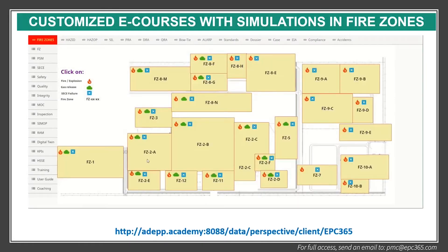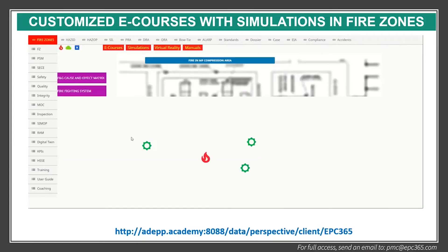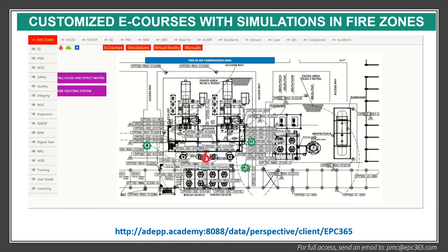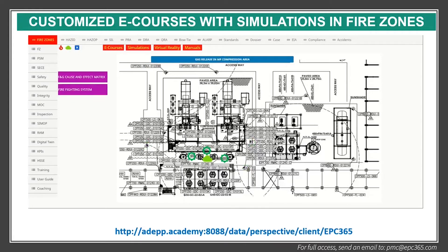We can do the same things for the compressor area. If you click here, you come to the compressor area, and you can see — if there is a fire and explosion in this area — what happens. You can also see the gas detection, cause and effect matrix, and firefighting system.